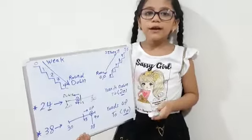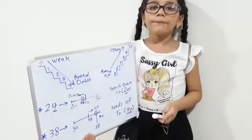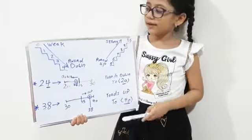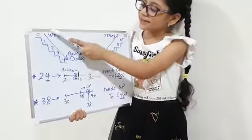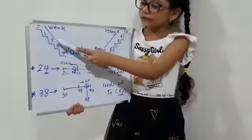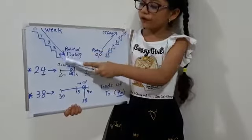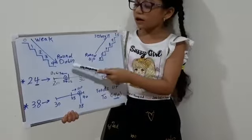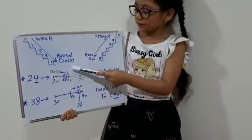You will learn about round up and round down. 0, 1, 2, 3, 4 are weak, so they are rounded down.